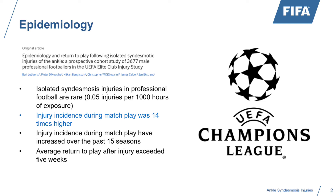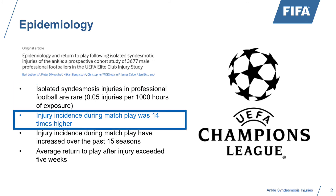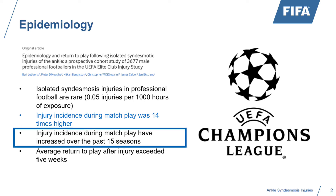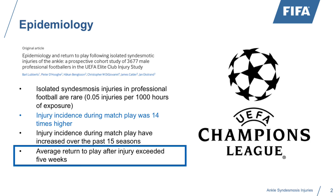What came out of it is that this is still a rare type of injury. We know that it occurs 14 times more in match play compared to training play, and we've seen an increase season over season over the last 15 football seasons. Although you have different gradings, in general a high ankle sprain never allows a football player to return to play before five weeks after injury. So it's quite an injury with an interesting need for rehab and time to return to play.